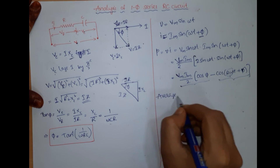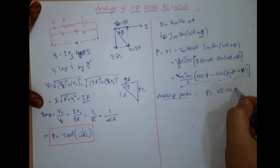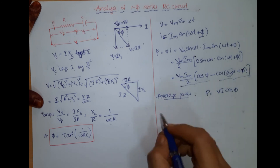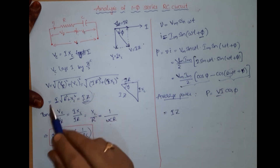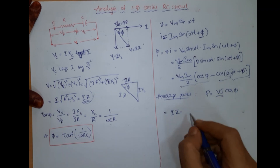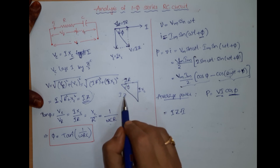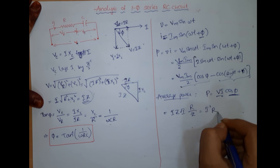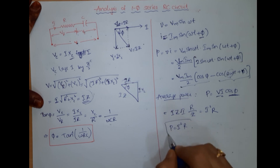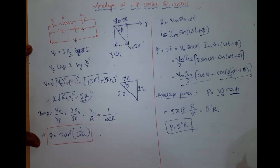The average power can be given by P equals V I cos phi. Since V is nothing but I into Z and cos phi from the impedance triangle is the adjacent side by hypotenuse, that is R by Z, I can write it as I squared R. So P equals I squared R. This covers the different parameters of a series RC circuit. Hope you have understood the concepts. Thank you.